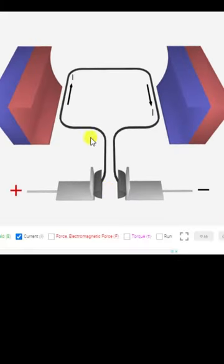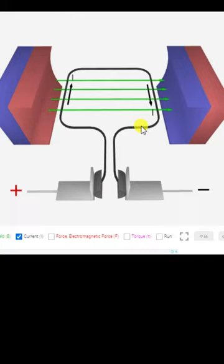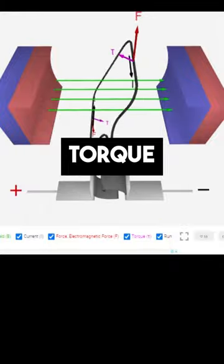As the current flows through the coil and it is placed between opposite poles of magnet, opposite forces act on the two sides of the coil and that causes a torque and hence it rotates.